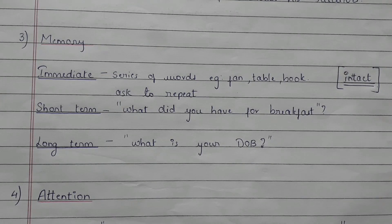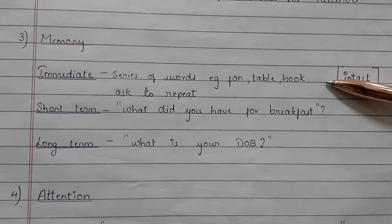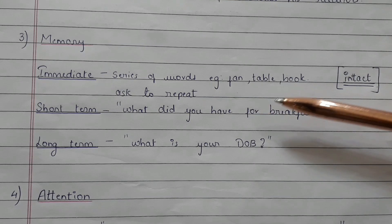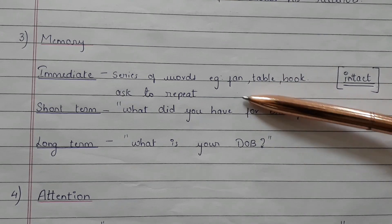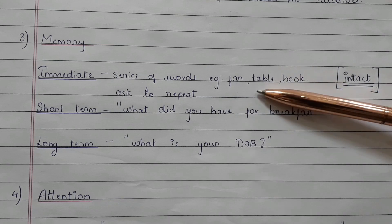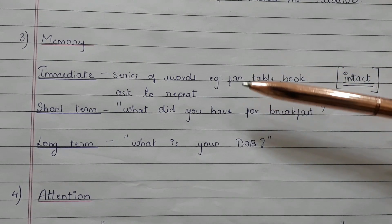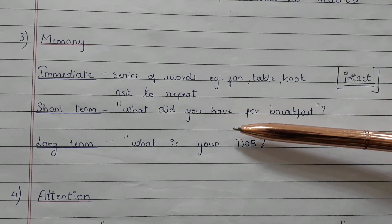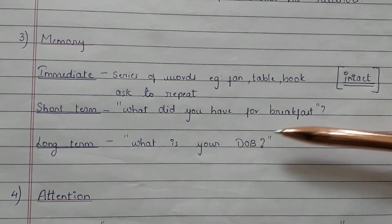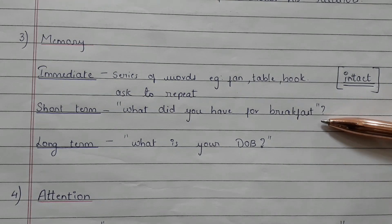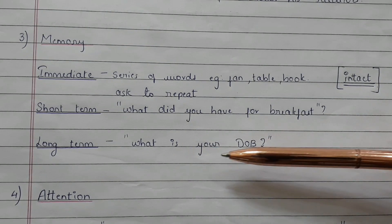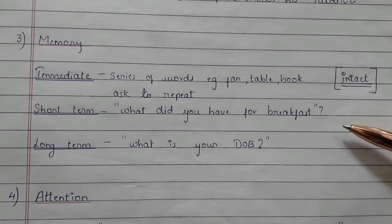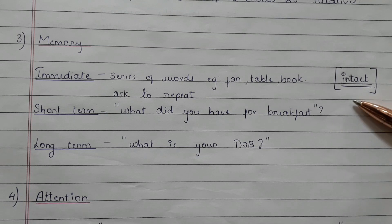The third one is memory. Under memory we have immediate memory, short-term memory, and long-term memory. For immediate memory, tell the patient a series of words — for example, fan, table, book — and immediately ask them to repeat all three words. For short-term memory, ask the patient what they had for breakfast and confirm with a relative. For long-term memory, ask the patient their date of birth, and note whether their memory is intact or not.